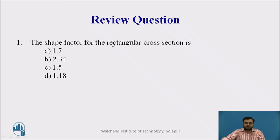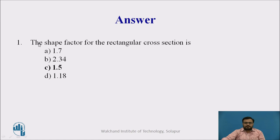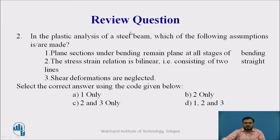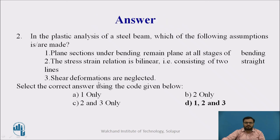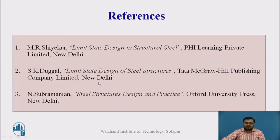Now we have some review questions. First: what is the shape factor for the rectangular cross-section of a simply supported beam? The answer is 1.5. Second: in plastic analysis of a beam, which assumptions are made? The plane section under bending remains plane at all stages; the stress-strain relation is bilinear consisting of two straight lines; shear deformations are neglected. The answer is that all three are correct. These are the references — thank you.